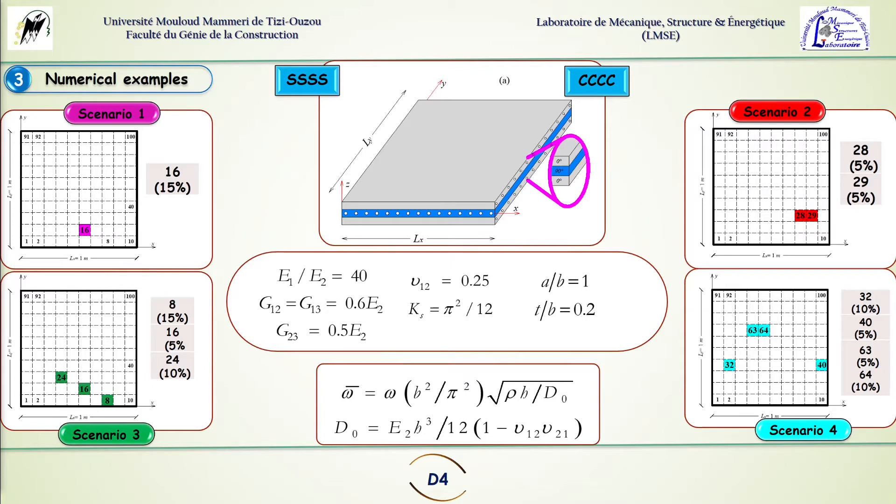In each damage scenario we have different levels of crack intensity and we simulate this intensity or index by a reduction in the rigidity in the local element.